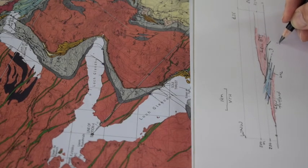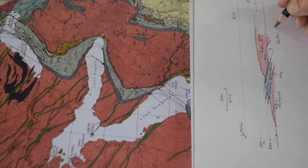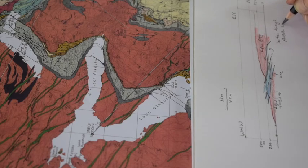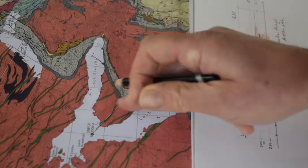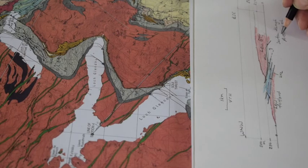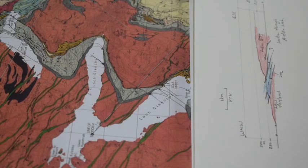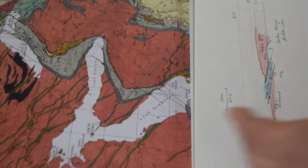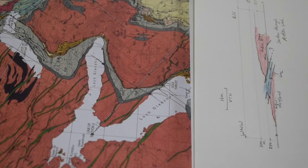And label it, Section Through Aird da Loch, which is the name of this landscape. So there you have it. A stepwise approach to quickly drawing a working cross section through a part of a geological map. Thank you.